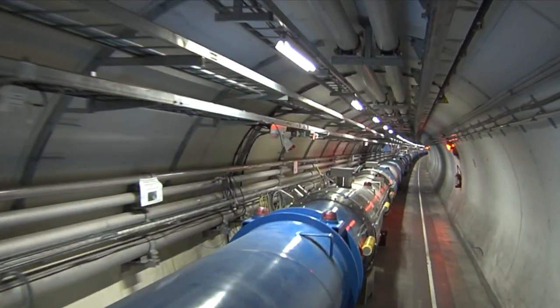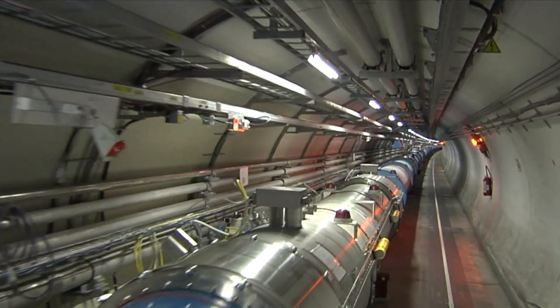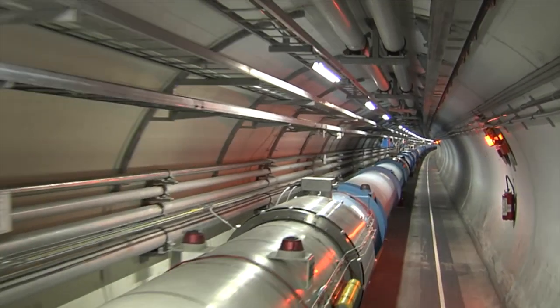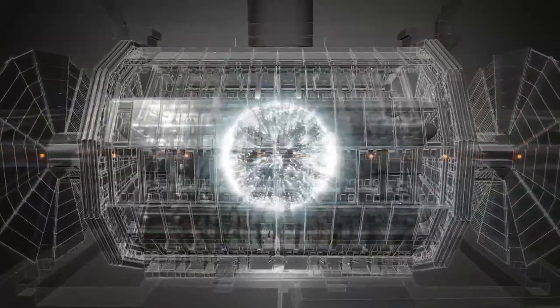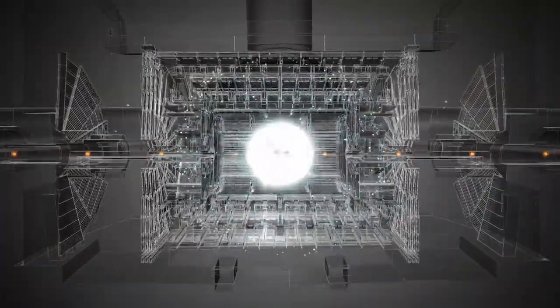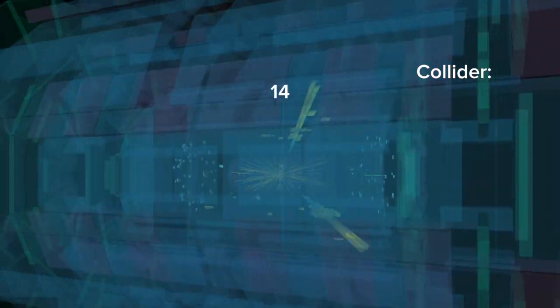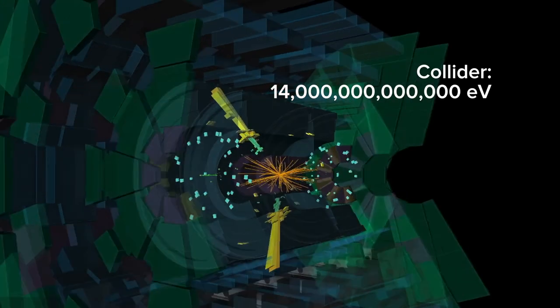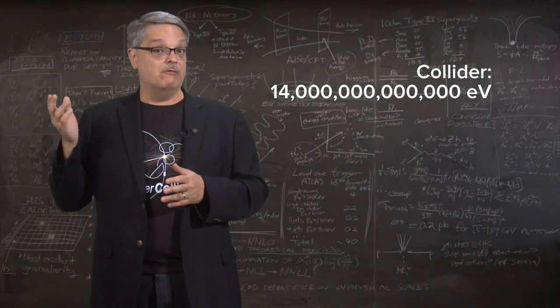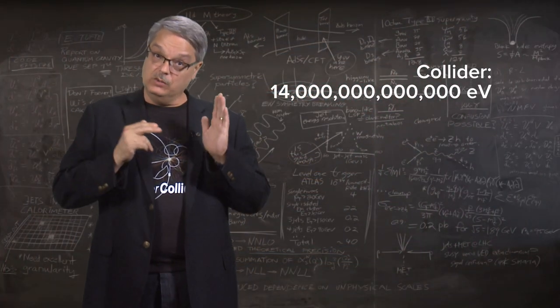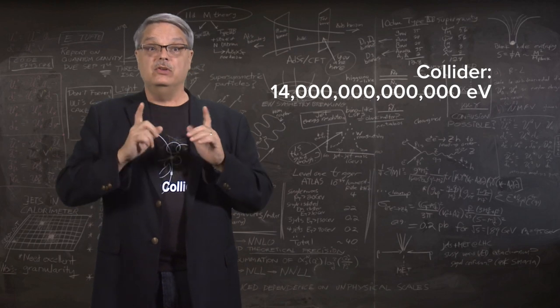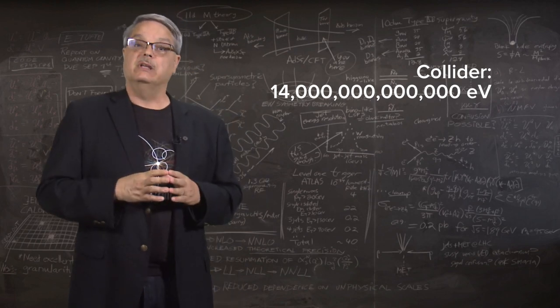As an example, you can consider the proton beam at the Large Hadron Collider. At designed energy, the beam will have 7 trillion electron volts of energy. If two beams hit each other, the energy available to do research is a whopping 14 trillion electron volts.